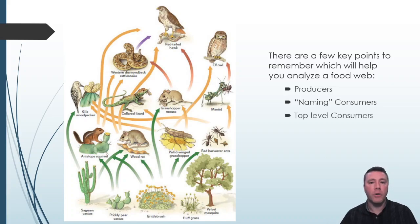The top-level consumers, like the red-tailed hawk and elf owl, have no arrows from them, indicating that they have no natural predators. It is common for food webs to not include decomposers. Decomposers obtain their energy by digesting deceased organisms. So were decomposers to be included in this food web, there would be a bunch more arrows from every organism that's already in this web pointing to the decomposers.